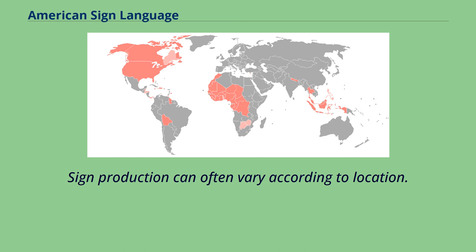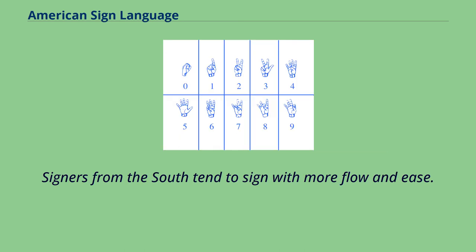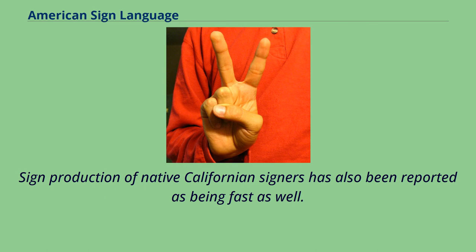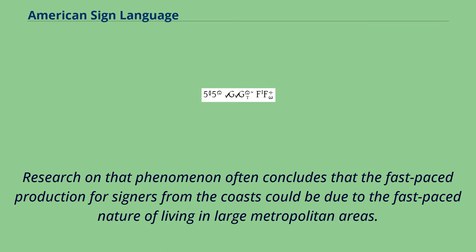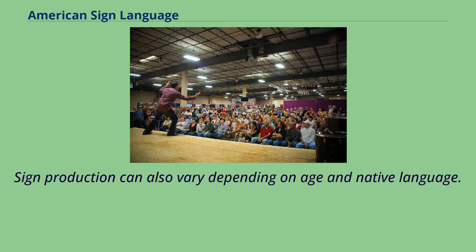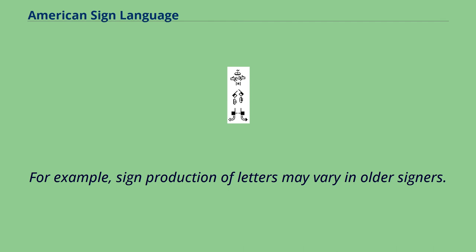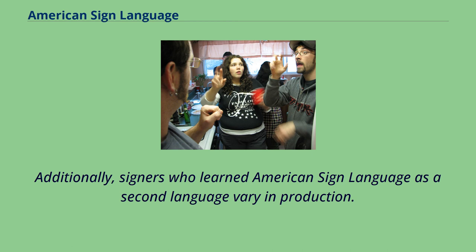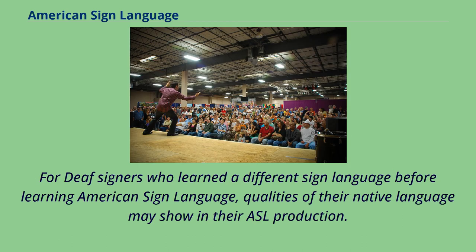Sign production can often vary according to location. Signers from the South tend to sign with more flow and ease, while native signers from New York have been reported as signing comparatively more quickly and sharply. Sign production of native Californian signers has also been reported as being fast. Research often concludes that the fast-paced production for signers from the coasts could be due to the fast-paced nature of living in large metropolitan areas. Sign production can also vary depending on age and native language; for example, sign production of letters may vary in older signers, and slight differences in fingerspelling production can be a signal of age.